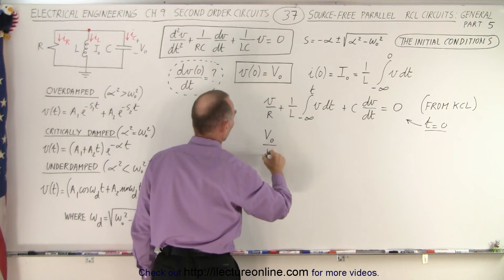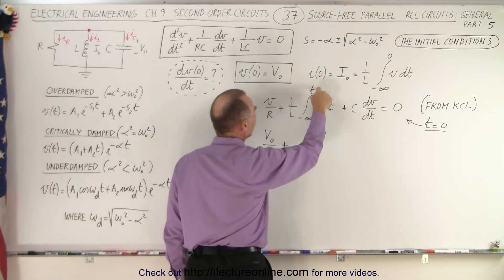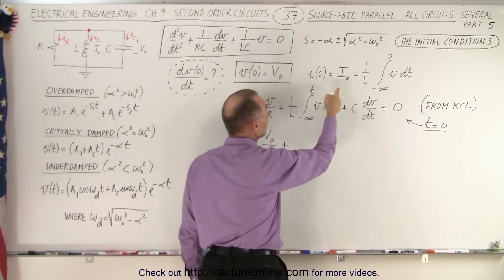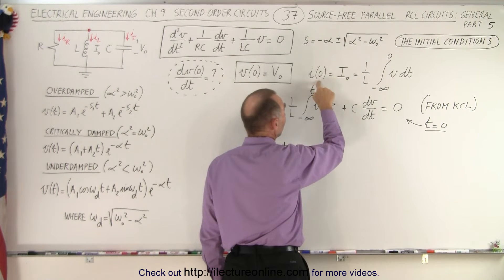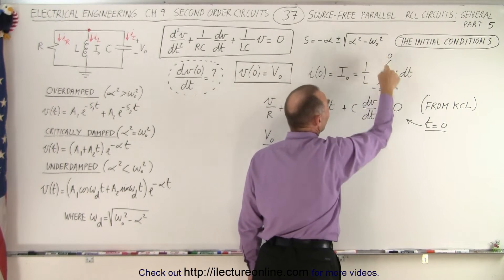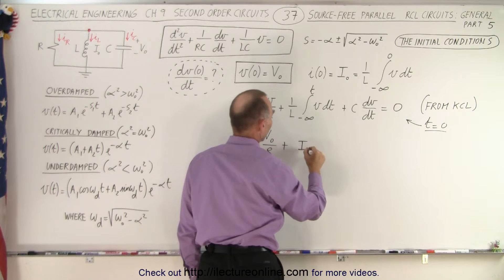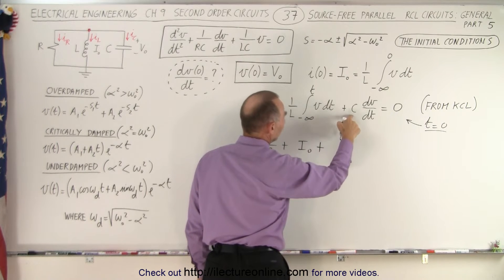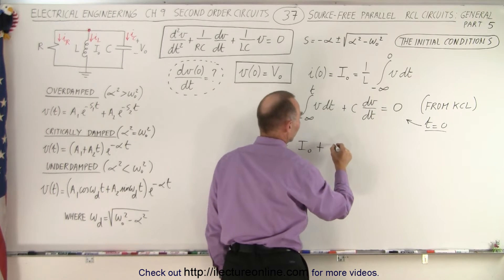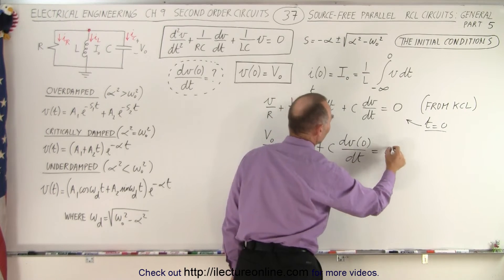So here we end up with V sub-naught over the resistance. Now here we have 1 over L times the integral from negative infinity to T of V dt. That becomes from negative infinity to zero, and by definition the current when time equals zero is the initial current through the inductor, so this whole thing simply becomes I sub-naught. Then plus C times dV when time is equal to zero with respect to time, and that must also equal zero.